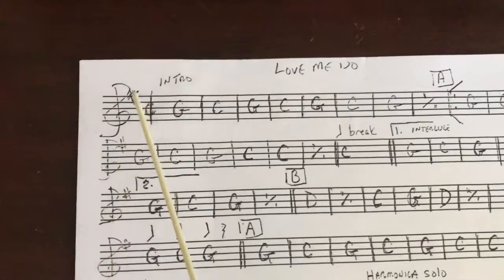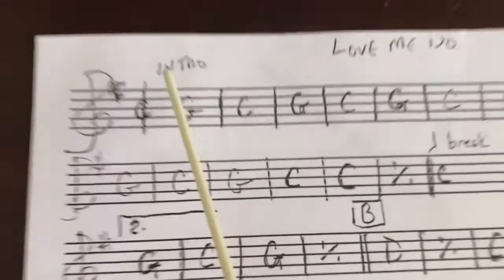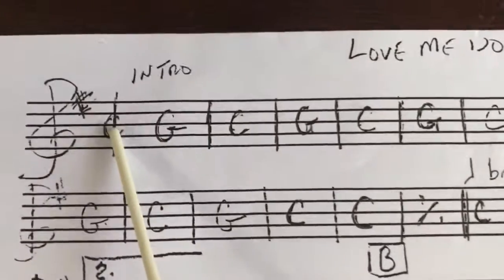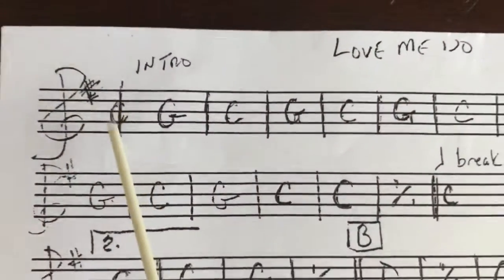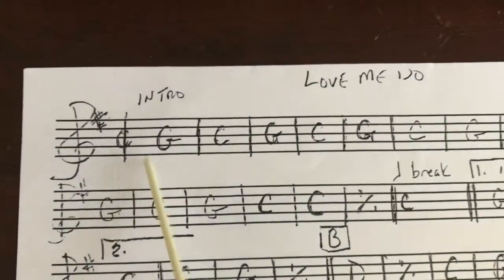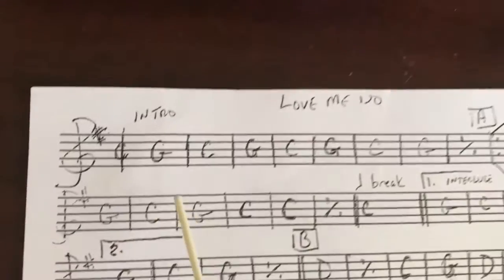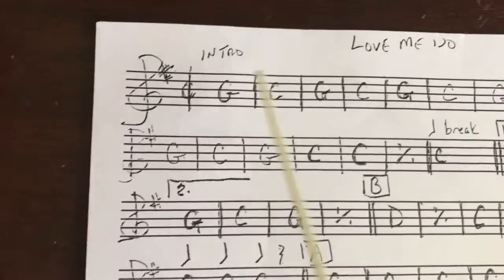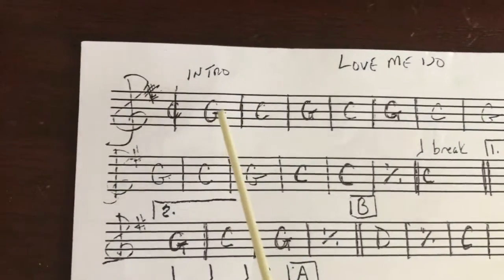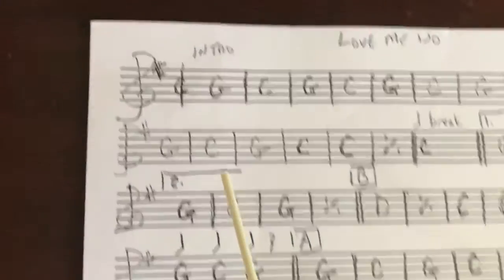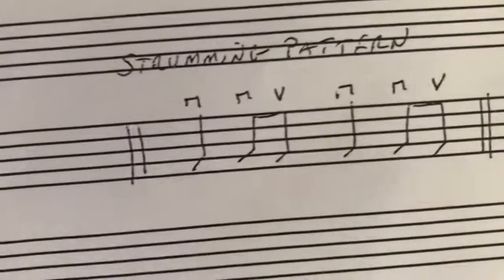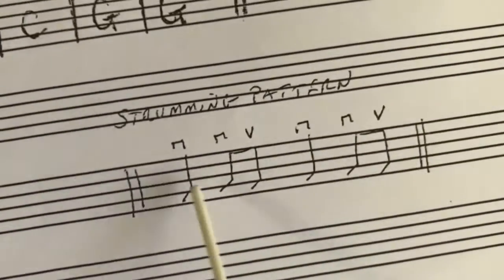Treble clef, one sharp — key of G, cut time. So it's in 2/2, right? 1-2, 1-2 — every one of these measures you get two beats. Also, look at your strumming pattern. That's one measure.